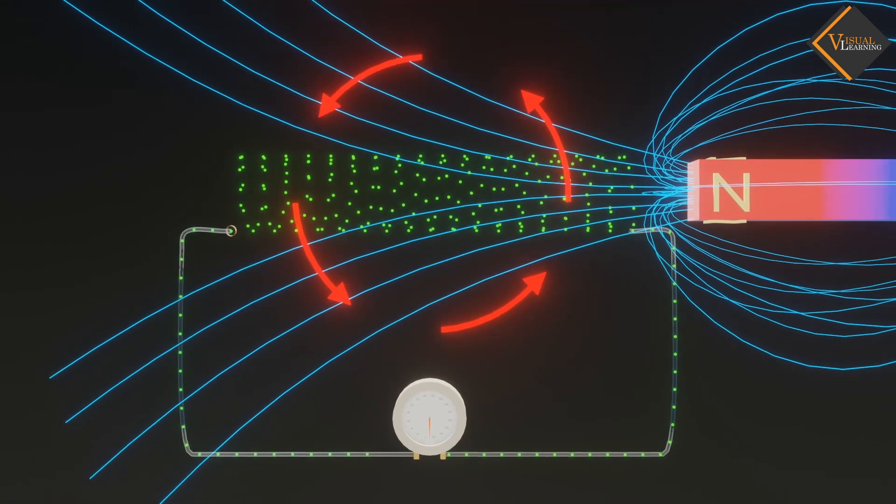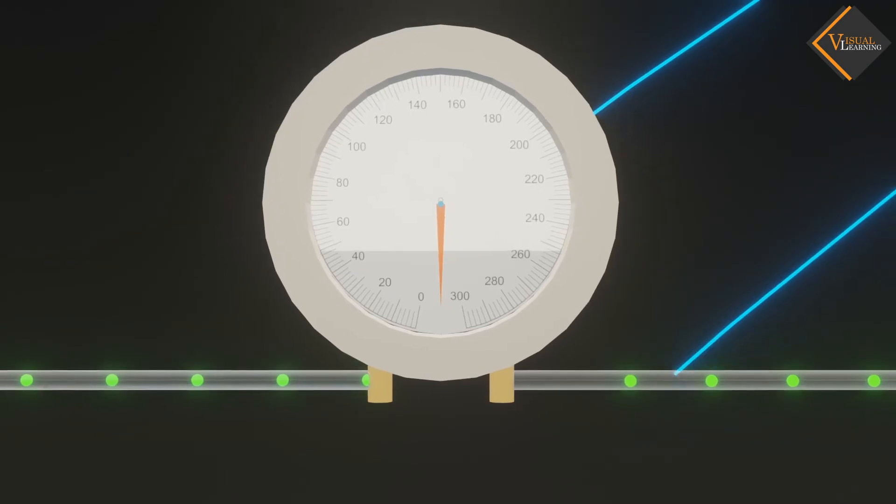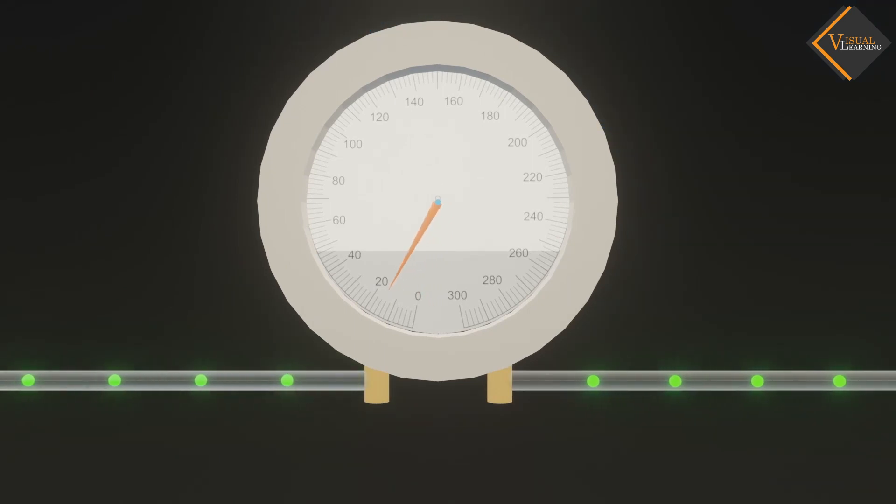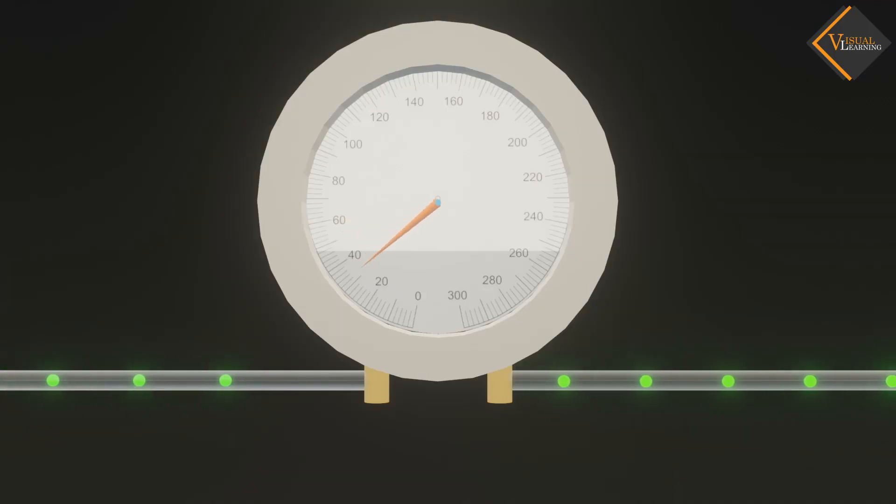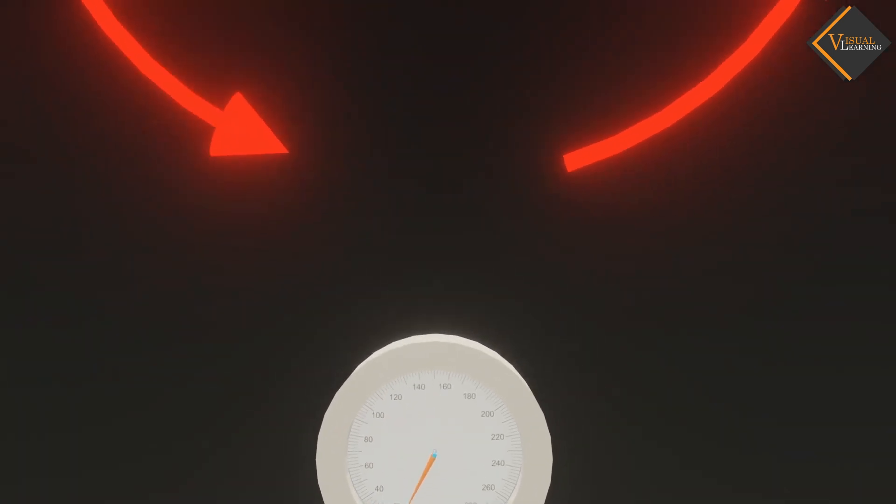As we move the bar magnet forward, the ammeter shows deflection in a particular direction. When we move the bar magnet backward, the deflection is in the opposite direction. The direction of this current changes with the motion of the bar magnet.